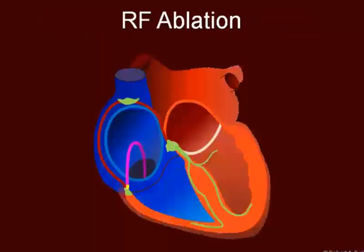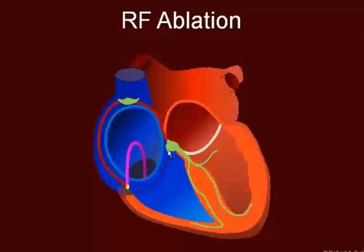One of the techniques used to correct this is called RF ablation. In this procedure, we place a catheter with a tip that can be heated by high frequency radio waves. That heat will then destroy the tissue and leave behind scar tissue. The tip is heated, scar tissue is left behind. This procedure can also work on the slow pathway in an AV nodal re-entry tachycardia.